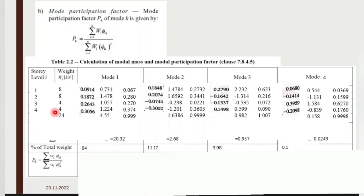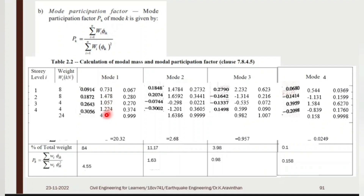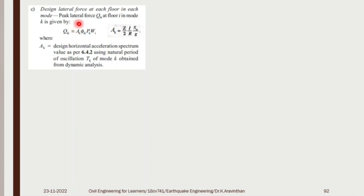The participation factor Pk equals (W × φ column) divided by (W × φ² column). For example, 4.55 divided by 0.999 gives 4.55. The resulting participation factors are: 4.55, 1.63, 0.9, and 0.158. The third step is the design lateral force at each floor in each mode. The formula is Qik = Ah × φik × Pk × Wi, where Ah is the acceleration coefficient and φ is the mode shape participation factor.